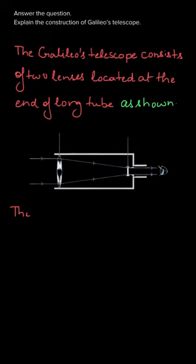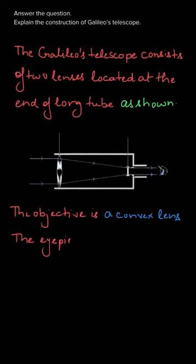We know that the names of these lenses - one is objective, one is eyepiece, so we will write about them. The objective is a convex lens and the eyepiece is a concave lens.